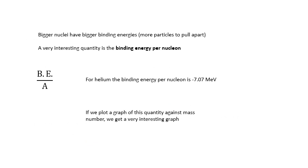Bigger nuclei will have bigger binding energies because there are more particles to pull apart. So the actual binding energy of an atom isn't that interesting. What is interesting and useful is the binding energy per nucleon — that's the average amount of work you would have to do to pull the protons and neutrons apart. It's the binding energy divided by the nucleon number. For helium, the binding energy was about 28 MeV, so the binding energy per nucleon is about 7 MeV, or minus 7.07 MeV.